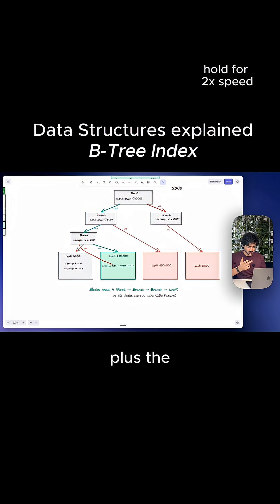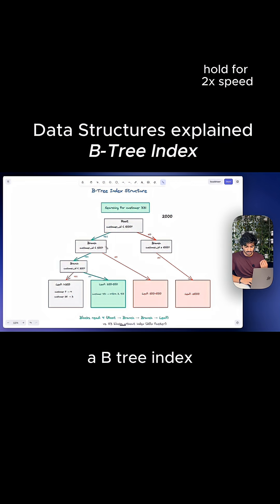So four index blocks plus the two extra blocks that we need to read of data. Compare that to the 83 or hundreds of blocks that we had to read before. It can be 10 times faster. It can be 20 times faster. It can be a hundred times faster depending on the size of our data set. So that's why a B tree index is so quick because at each level, the tree eliminates half of the search space.